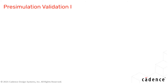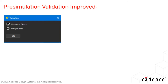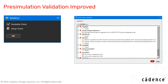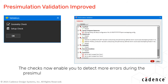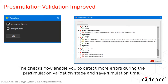Pre-simulation validation checks have been improved in both Clarity 3D Layout and Clarity 3D Workbench. In earlier releases, the pre-simulation checks were not enough to detect all errors in the design, leading to errors being detected during the simulation stage and wasting simulation time, particularly for large designs. Now, many more pre-simulation validation checks have been added that enable you to detect most errors prior to running the simulation.